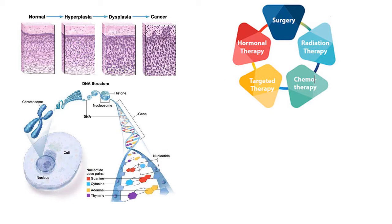Such environmental exposures include substances such as chemical exposure or radiation. There are different types of cancers — around 200 types of cancer have been identified till now.